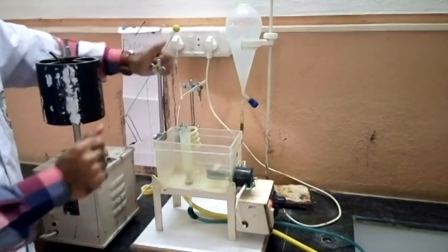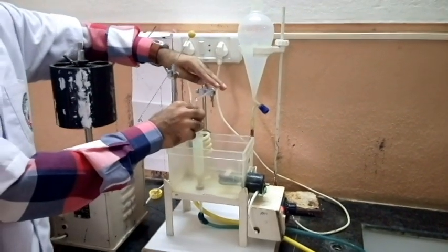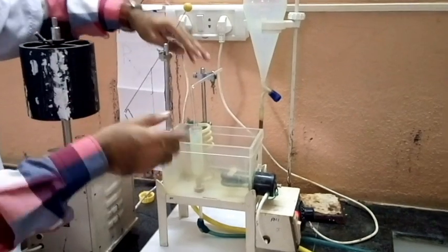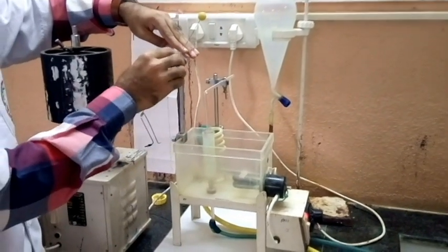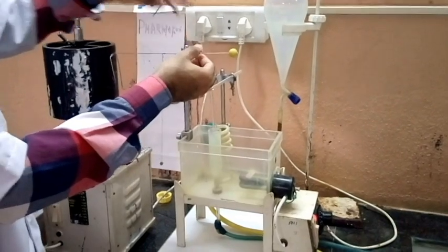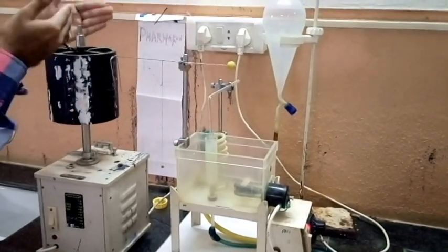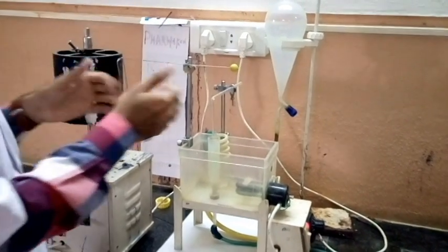The organ bath consists of two supporting stands. One is used to support the aerating tube which supplies oxygen to keep the tissue alive, and the other one has a specialized lever called the fulcrum into which we introduce the writing lever. The writing lever is used to record different dose responses of the tissue which is suspended.